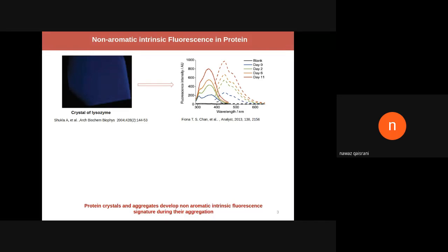This unconventional emission in proteins really puzzled many people. Later, people tried to understand the origin of this fluorescence. Interestingly, this kind of fluorescence emerges during the aggregation process and is a function of aggregation time, with fluorescence intensity increasing. This is also observed in other systems.